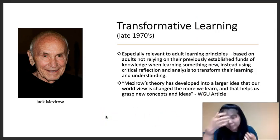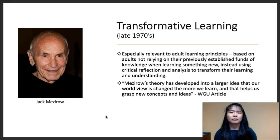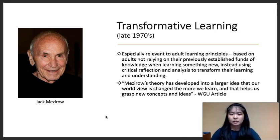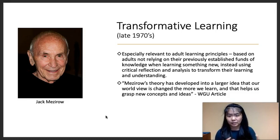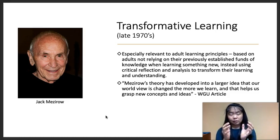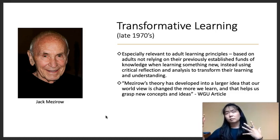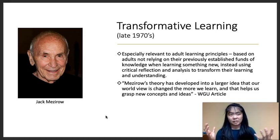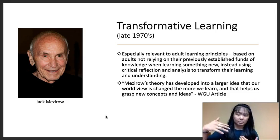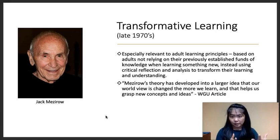The second framework is transformative learning, put forward by researcher Jack Mezirow. This is especially relevant to adult learning because it's based not on adults relying on their previously established funds of knowledge when learning something new, but instead using critical reflection and analysis to transform their understanding. The idea is that learning happens from the tension between knowing what you know and encountering new information — that friction between the known and the unknown should be harnessed to grab attention and direct focus toward learning something new.